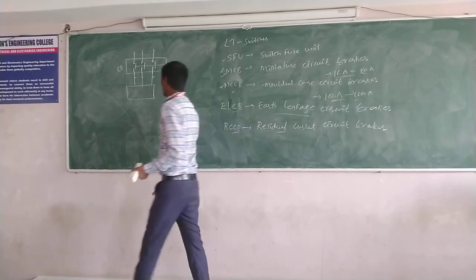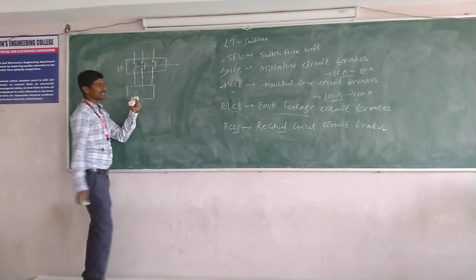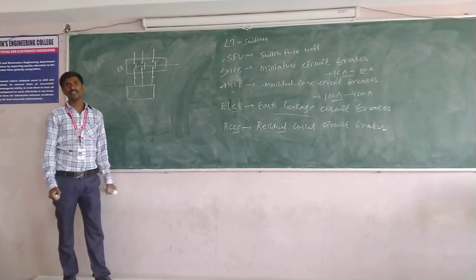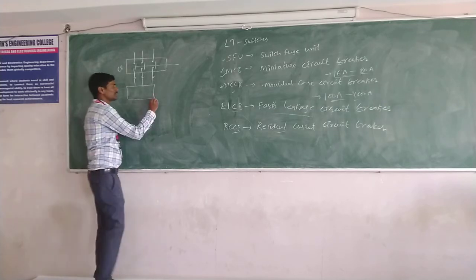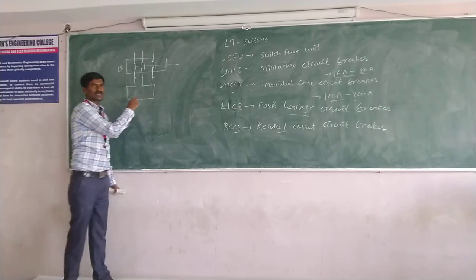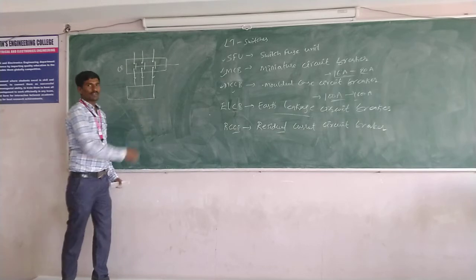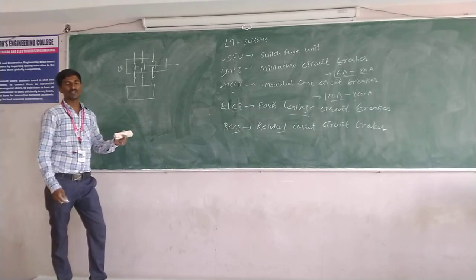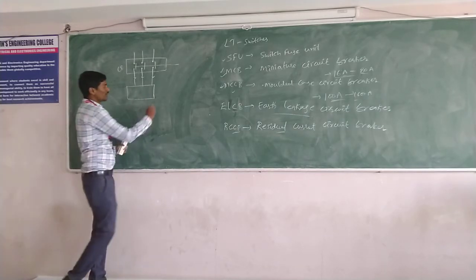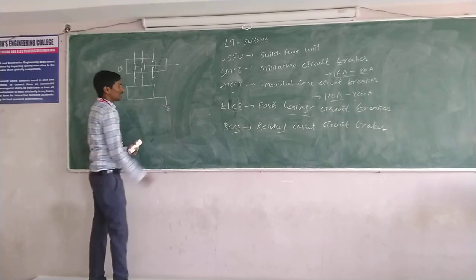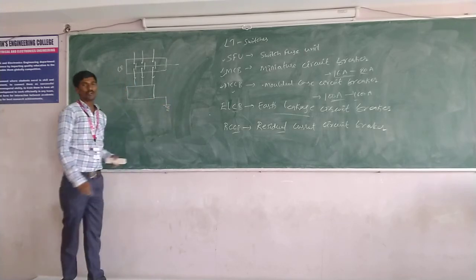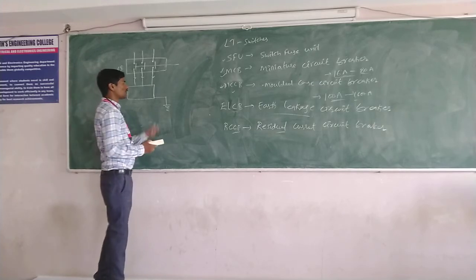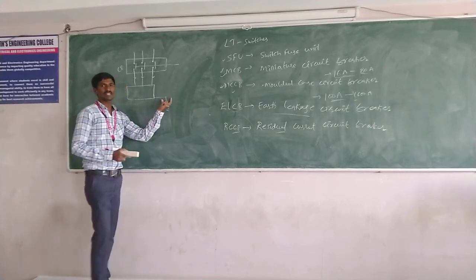But whenever any wire insulation gets damaged, leakage current flows to the body of the machine. If anyone touches this body, they will get a shock. So we ground the body of the load. Before grounding, we place an ELCB between the supply and the load.